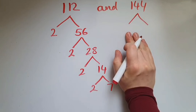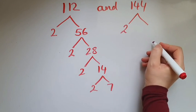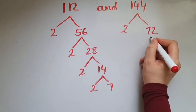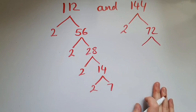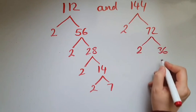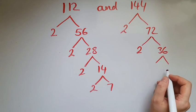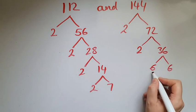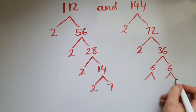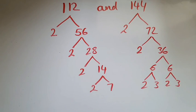Let's try 144. I start by dividing by 2, but you could use 3, 5, 7 — any prime number. So 2 times 72. Then 72 divided by 2 gives us 36. I could do 6 times 6 here, and go further: 2 times 3 and 2 times 3. So now we draw the Venn diagram.